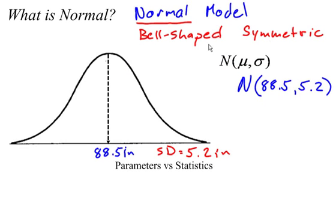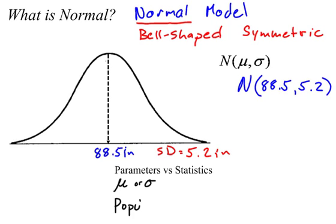And one other thing I want to point out is that we're using parameters to describe the model because the model is supposed to represent the population. Parameters, we always use Greek letters like mu or sigma, and this represents the population.